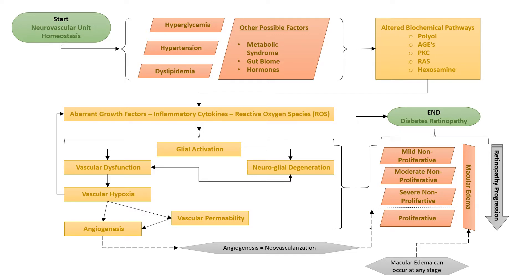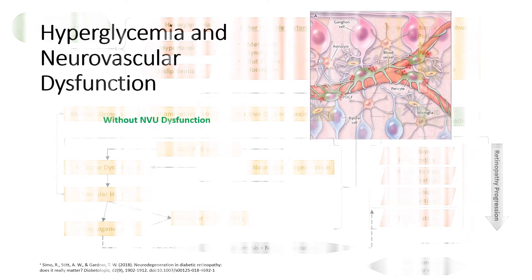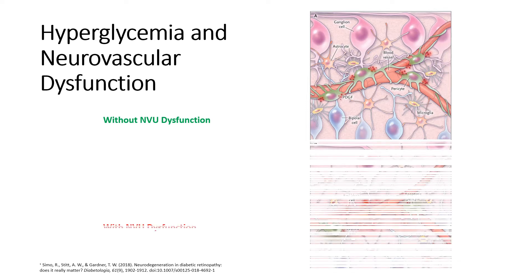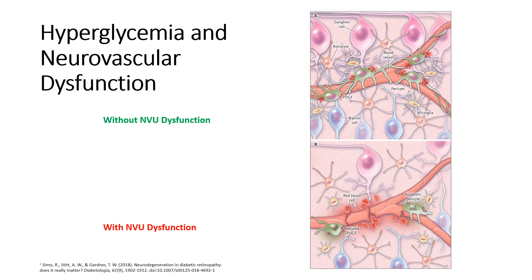The formation of new blood vessels is referred to as angiogenesis or neovascularization. This is a magnified illustration of the normal functioning neurovascular unit. The next image shows neurovascular unit dysfunction, where the pericyte is no longer functioning and the endothelium has developed vascular leakage and tissue hypoxia.